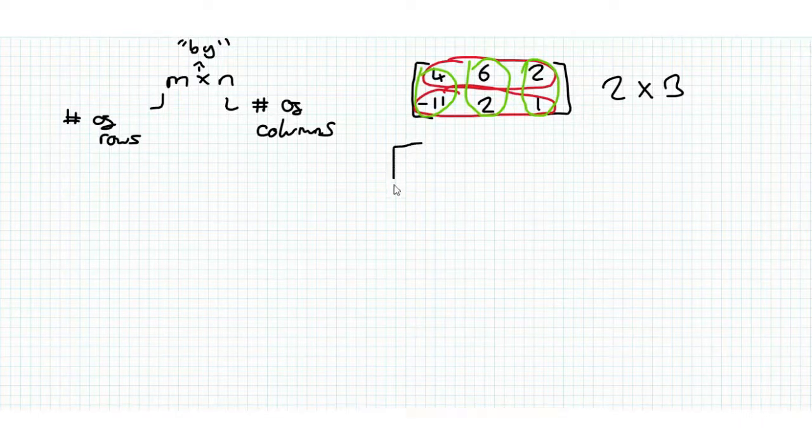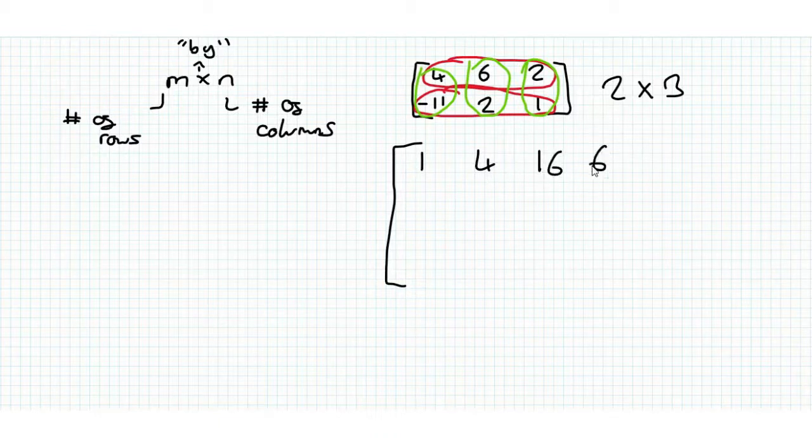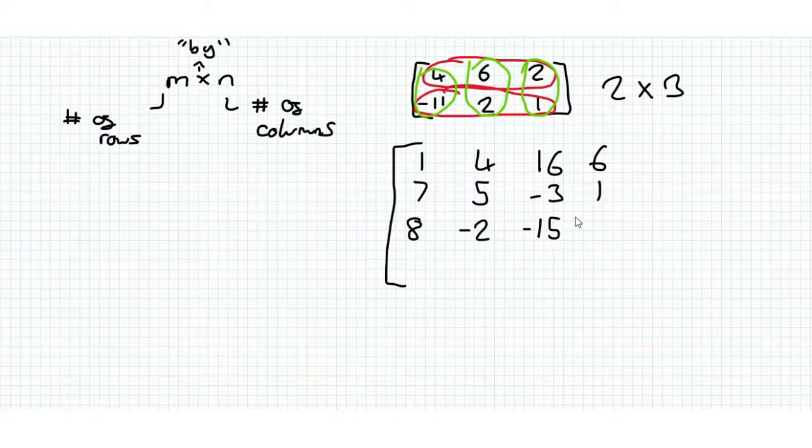Now for our next example, we're going to take matrix 1, 4, 16, 6. And that's important, make sure you read across like this and down to the next row, like you were reading in a language. 7, 5, minus 3, 1, 8, minus 2, minus 15, 1, and 2, minus 7, 8, minus 3.